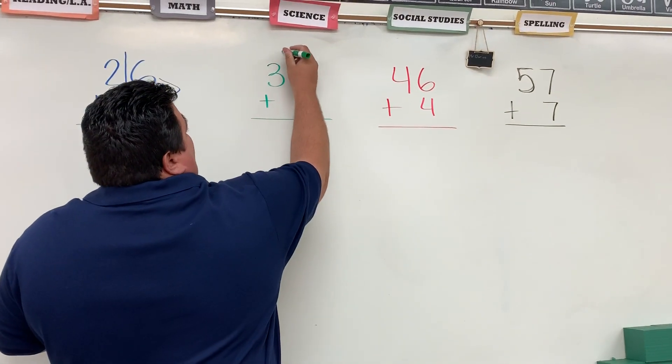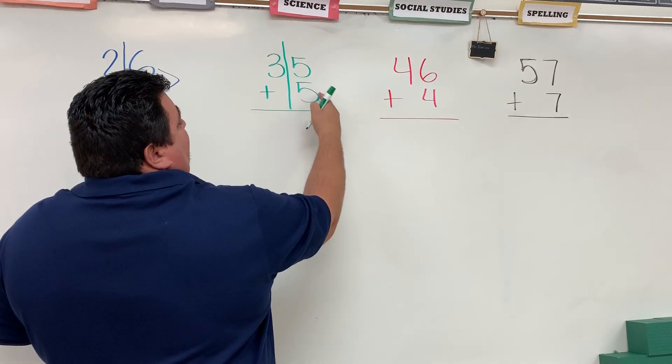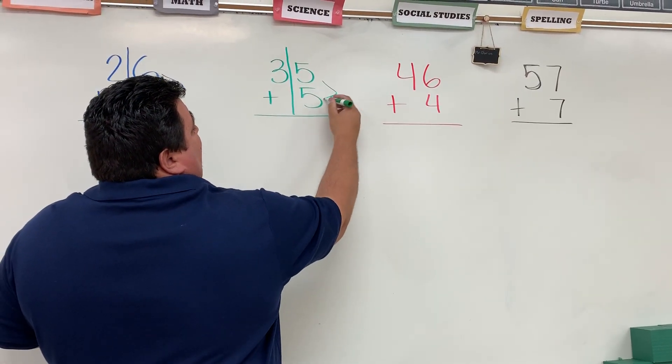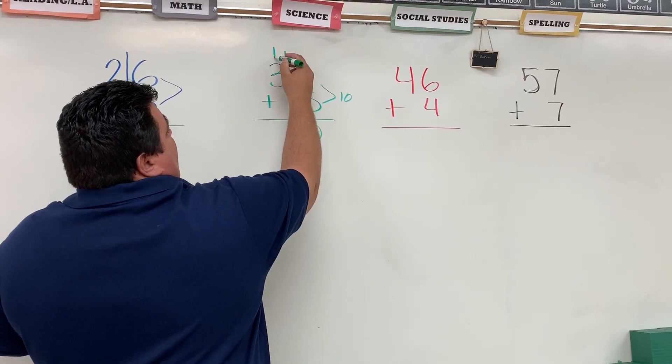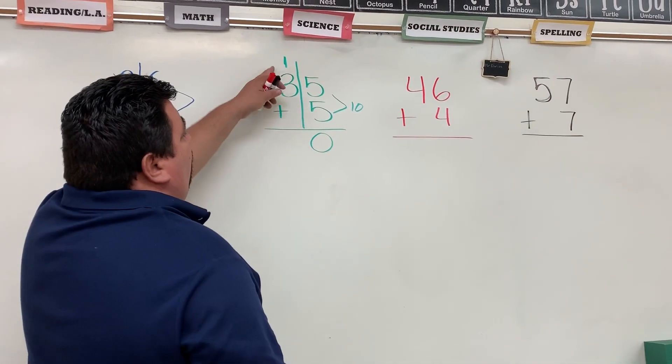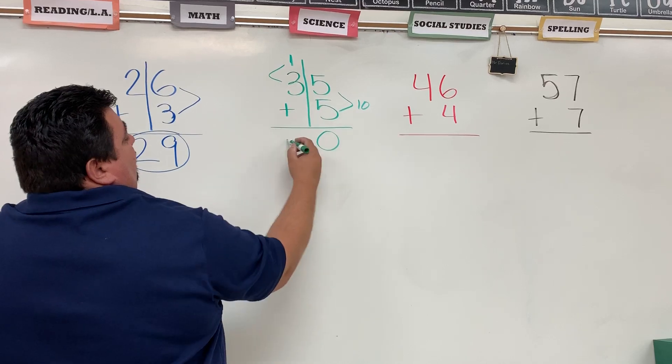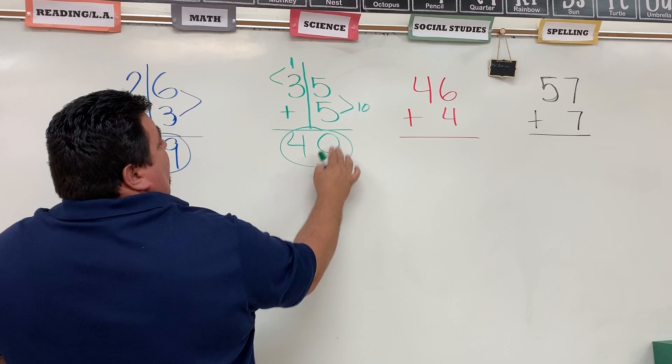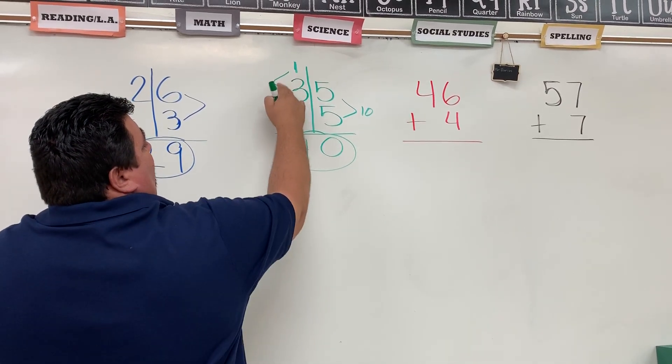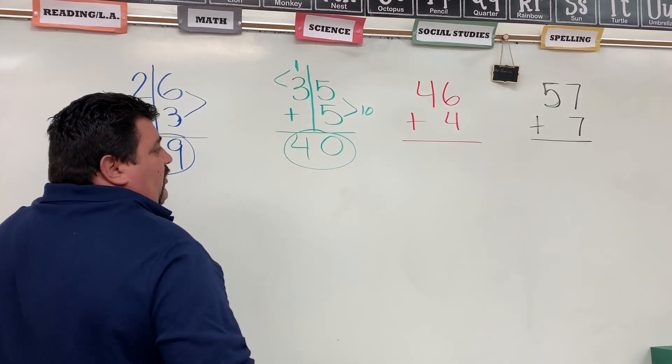First thing we do all the time is draw the line down the middle. Five plus five is ten. So I have ten. I need to put my ones here and my ten goes here. So now I have one plus three equals four. Notice that I added these two. I put my ones here and my tens at the top. One plus three equals four. My answer is forty.